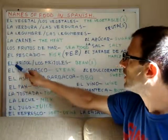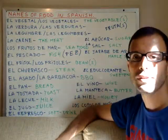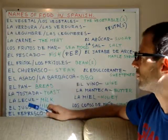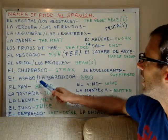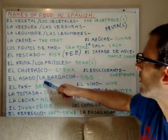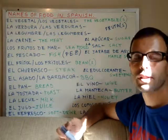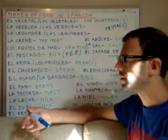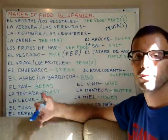El frijol, or los frijoles, means beans. El churrasco means steak. El asado or la barbacoa means barbecue. Actually, barbacoa can also refer to the place where we prepare the steak, the barbecue itself, while el asado just refers to the food.